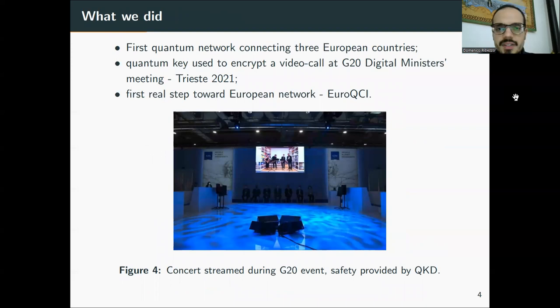What we did in this job was making for the first time a quantum network connecting three countries in Europe. This was also the first step towards the European quantum network. There is this project called the EuroQCI, European quantum communication infrastructure that aims to realize a quantum network in the European Union within 2027. This was the first practical step. We used this quantum network to do QKD and this key was used to encrypt a video call at the G20 Digital Minister's meeting held in Trieste last August 2021. The network was used to stream two classical music concerts from the conservatories of Ljubljana and Zagreb in the G20 meeting work.